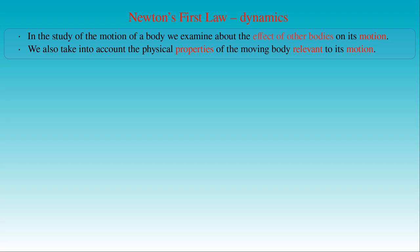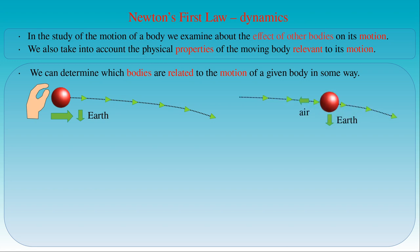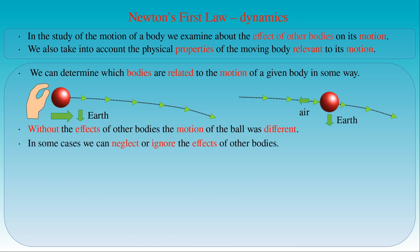In our everyday activity we can determine which objects are related to the motion of a given body. For example, if we throw a ball, our hand is the body moving the ball. If the ball is already flying in the air, then the earth and the air itself have some effects on its motion. Without the effects of these bodies, the motion of the ball would be different. In some cases we can eliminate or ignore the effect of other bodies.